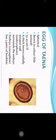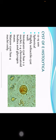Eggs of Taenia: the eggs of Taenia are spherical in shape, 30 to 40 micrometers in diameter. They are brown in color due to bile staining. They have a thick brown radially striated wall which surrounds the embryo. The embryo or oncosphere has three pairs of hooklets.